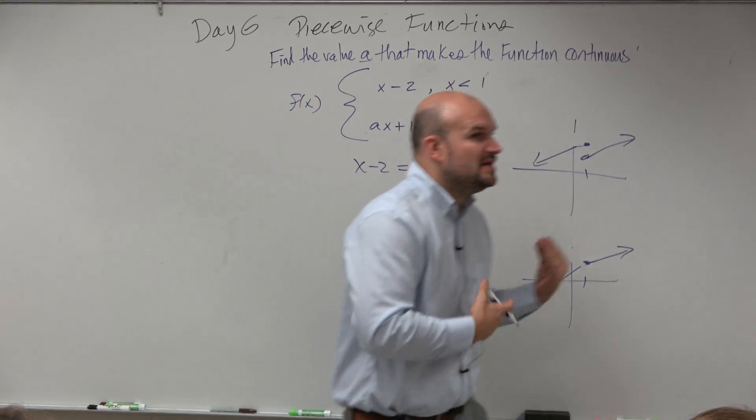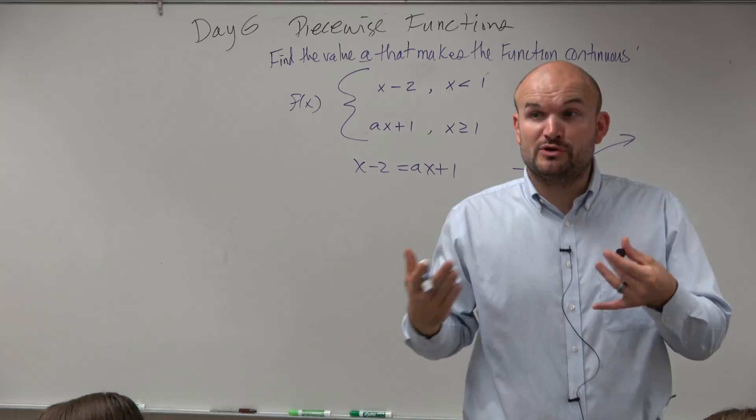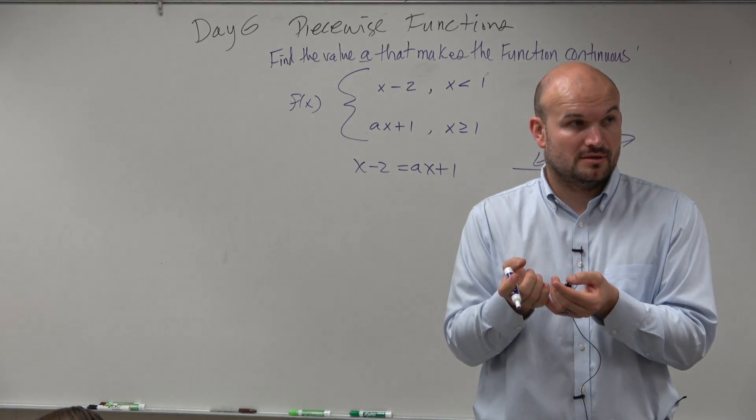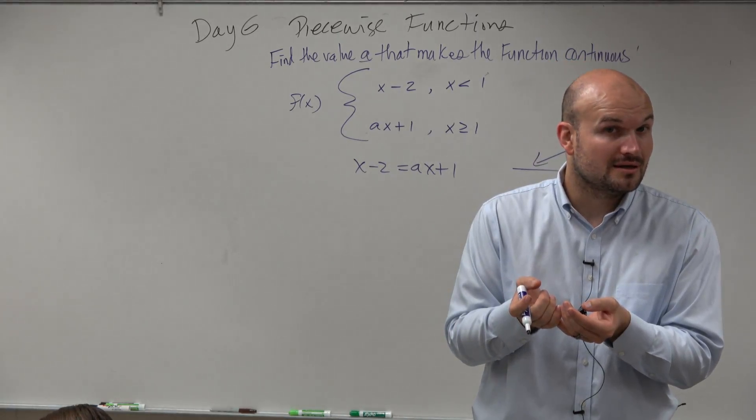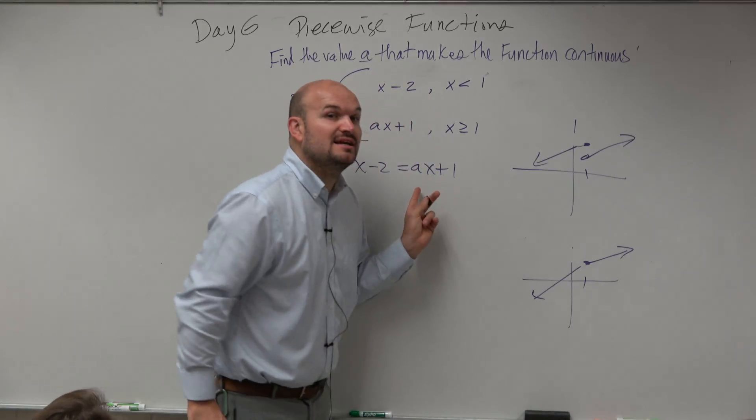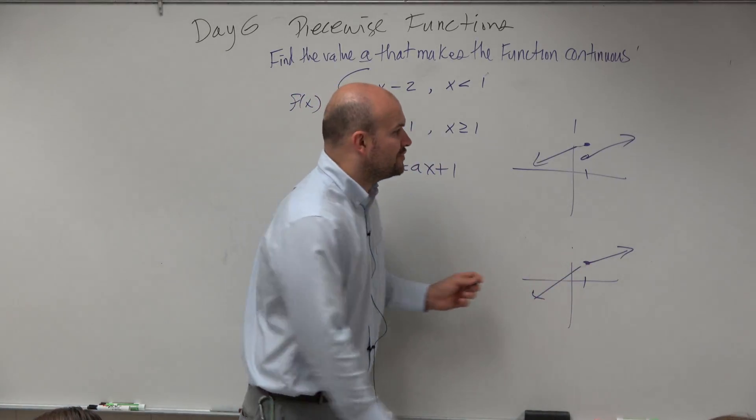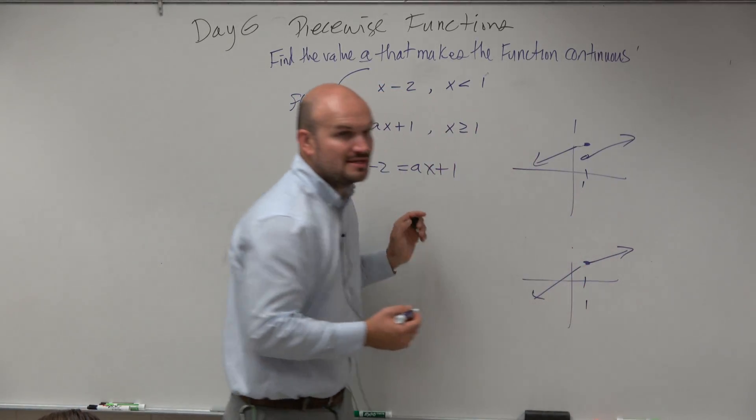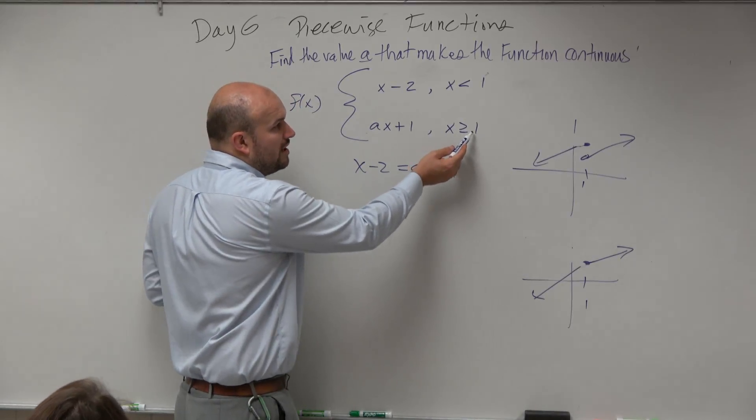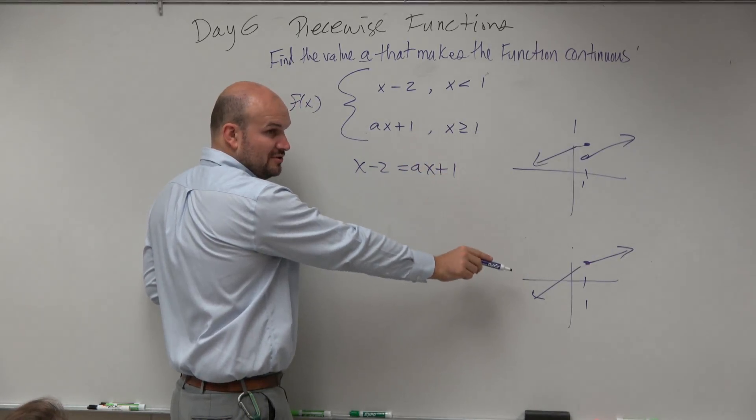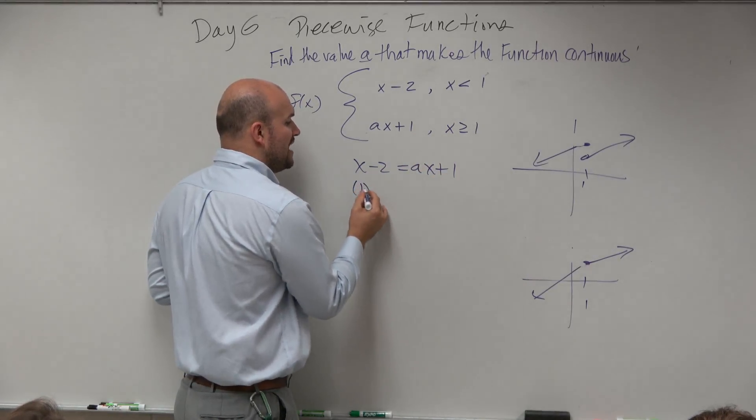Now, if they're going to be equal to each other, at what value are we trying to make them equal? At A. Well, A is going to be the value that's going to make them equal. But what value of the graph are we trying to make them equal at? 1. Well, what does 1 represent? 1 is the x value. So therefore, we can replace x with 1.